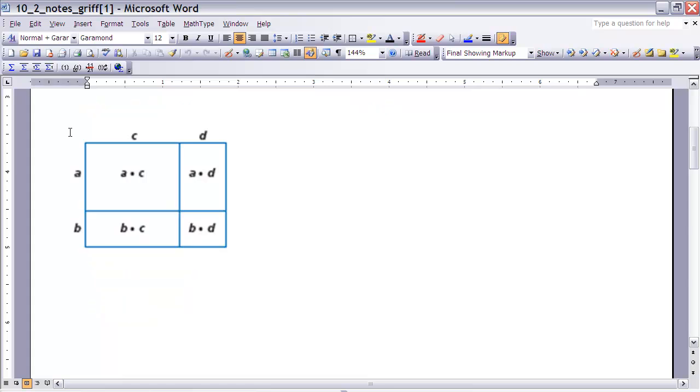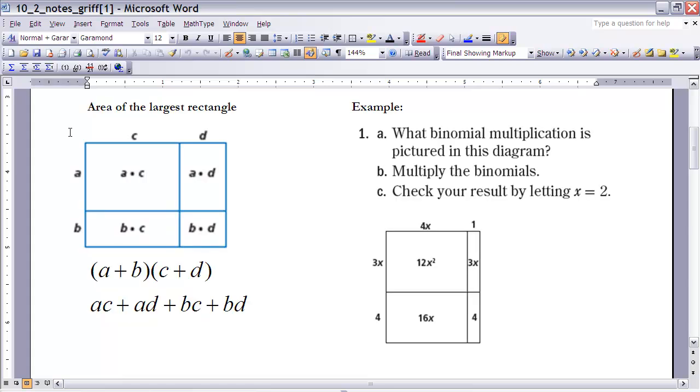All right, one of the concepts that we talked about earlier in this course is the idea of using the area model to perform a multiplication. The area model is where we take and we can break a rectangle into smaller rectangles that we can find the area of. So for instance, if I know that the length of this rectangle is, if this is A and this is B, then the length of that rectangle would be A plus B.